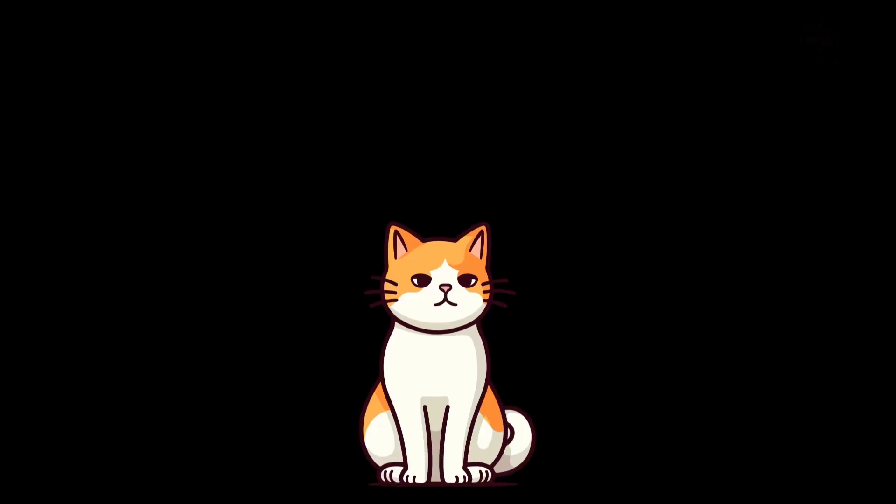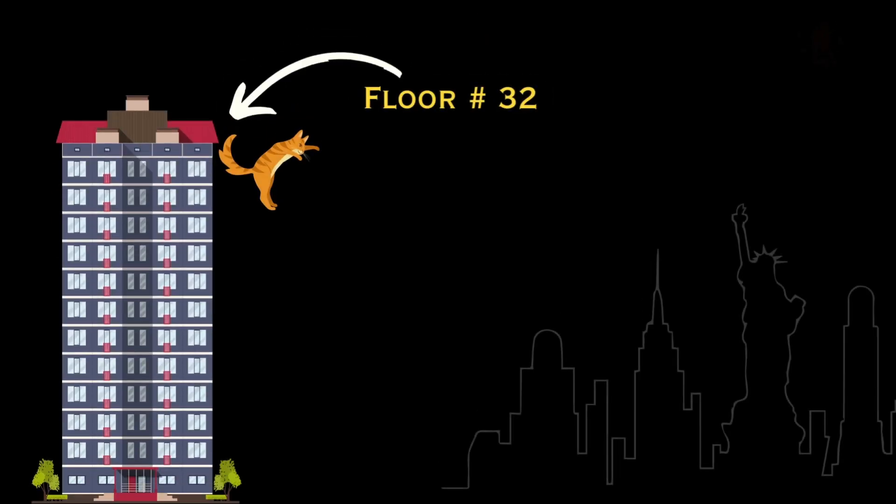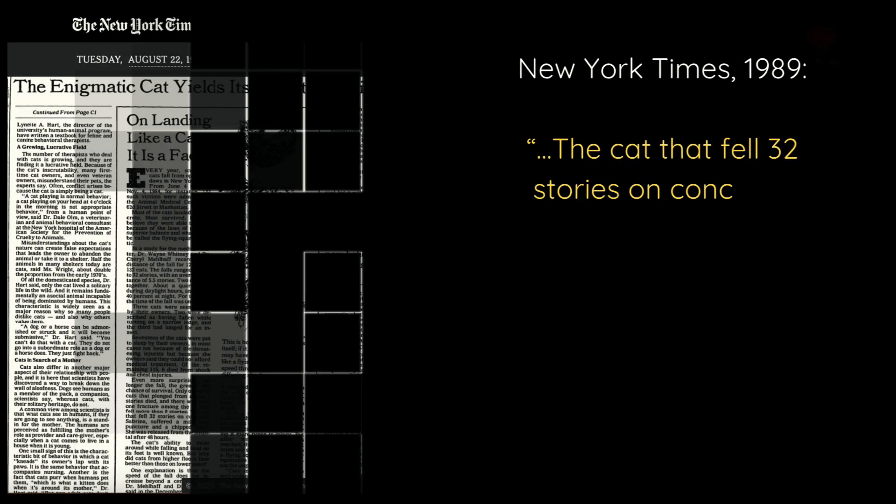In 1984, a cat named Sabrina actually fell from the 32nd floor of a New York City apartment—over 350 feet straight down onto solid concrete. You would expect that to be a tragic tale, right? But here's the twist: Sabrina survived with just a chipped tooth and a mild lung puncture. She was out of the hospital in 48 hours, back to life like nothing ever happened.